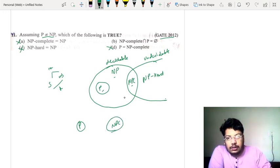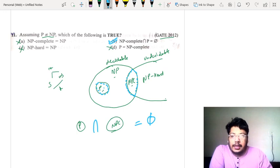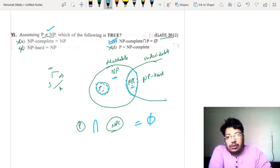If they are different from each other, would the intersection be important? If they are not common, the intersection would be empty. So I repeat that P is not equal to NP. What is true? NP-complete equal to NP? No. NP-complete is just a part or intersection of NP and NP-hard. It's not equal to NP. So this is not possible.